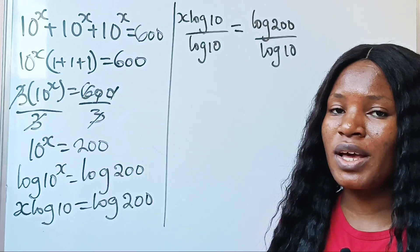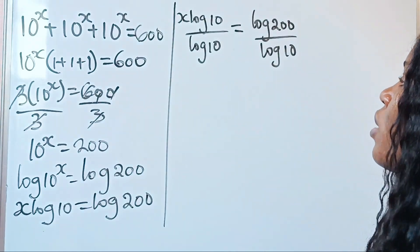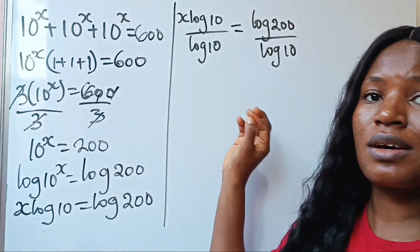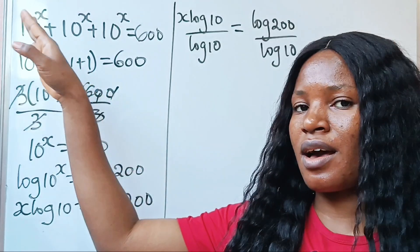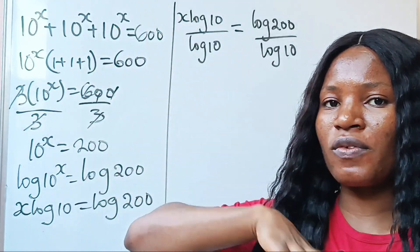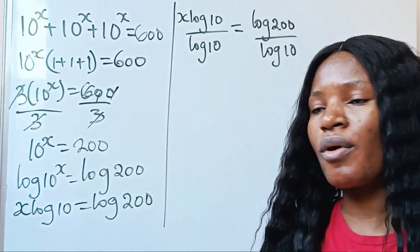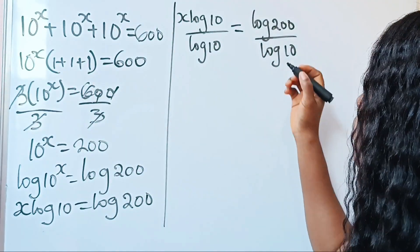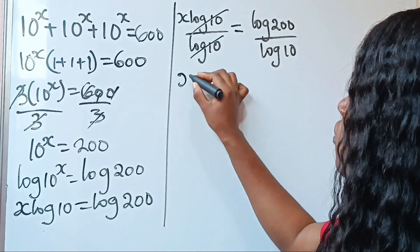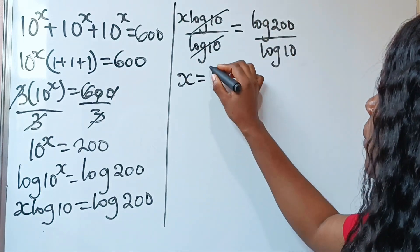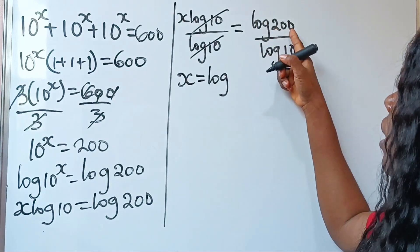I would like you to watch to the end, because at the end we are going to substitute whatever we got as our value into this particular equation to prove that it is correct or wrong. Now, this will divide itself, and we have x. Here we have log.